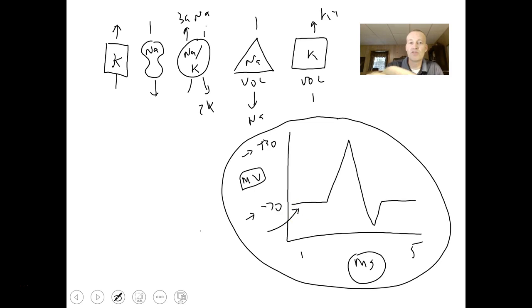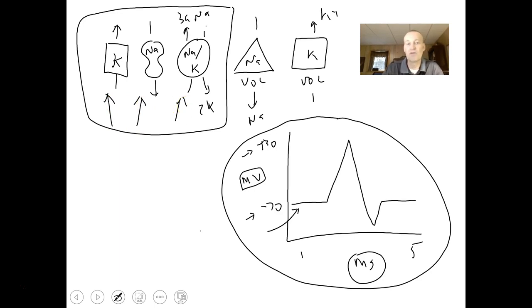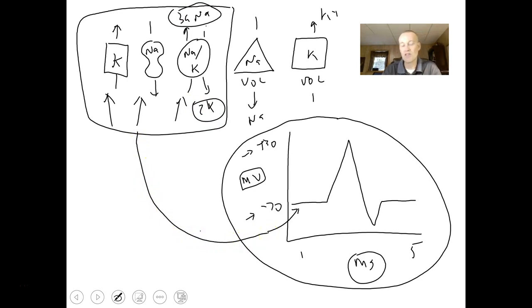That negative 70 millivolts is created by particular channels in the membrane. Potassium channels leak potassium out, sodium channels leak sodium in, and the sodium-potassium pump pumps out three sodium for every two potassium it brings in. The cumulative activity of all of these leads to the resting state potential of negative 70 millivolts. What's special about muscle cells and nerve cells is they have voltage-gated sodium and voltage-gated potassium channels that aid in changing the interior voltage.